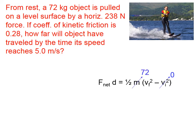A 72 kilogram object, so our mass changes to 72, is pulled on a level surface by a horizontal 238 newton force. Well, 238 newtons is the applied force, but it might not be the net force, so I'm not prepared to put 238 in for the net force yet. The coefficient of friction is 0.28.